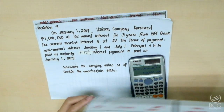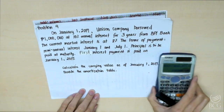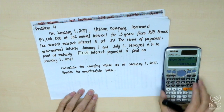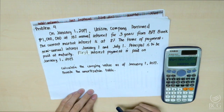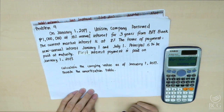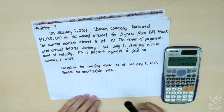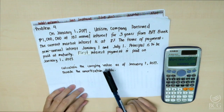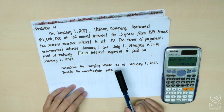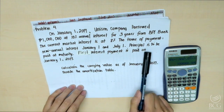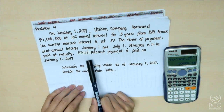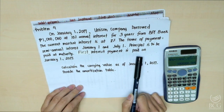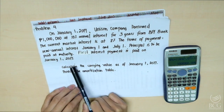Let's move forward to Problem 4. On January 1, 2017, Unison Company borrowed 1 million at 10% annual interest for 3 years from BPI Bank. The current market interest is 8%. The terms of payment: semi-annual interest every January 1 and July 1, and principal to be paid at maturity. The first interest payment is paid on January 1, 2017.